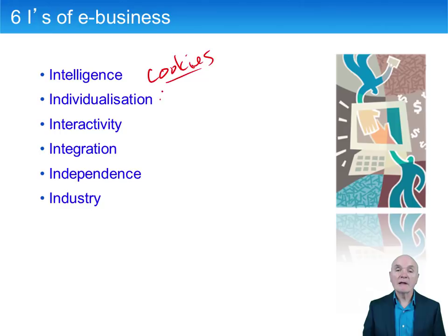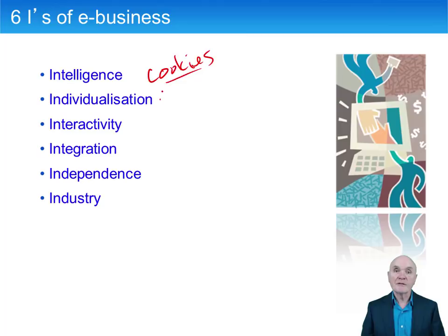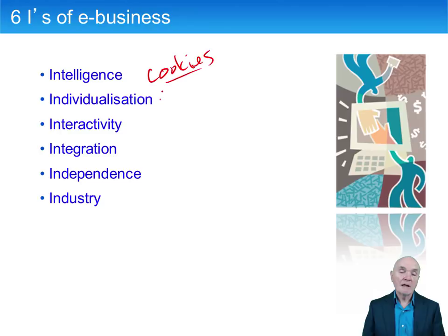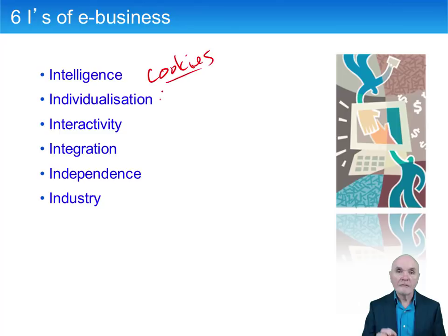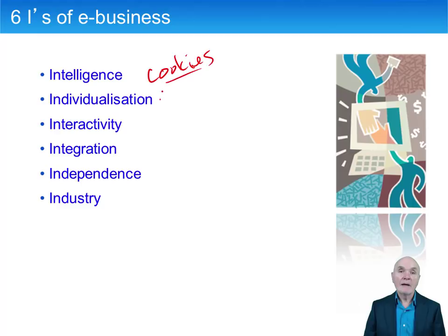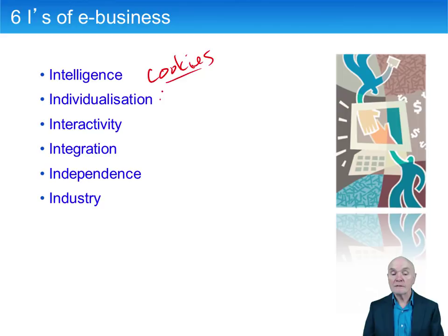Individualization means that every separate person who visits the site can potentially be given a slightly different experience. If previously you had expressed an interest or bought certain products, when you go to that site, up on the home page they can advertise other products you might be interested in. If you've ever booked planes or trains, you can normally store your seating preferences — so if you always like an aisle seat, it will remember that and offer it to you. If they offer you something you're particularly interested in, you are more likely to buy it — this is upselling.